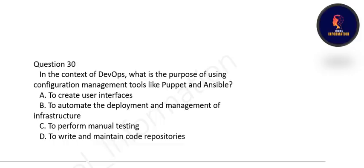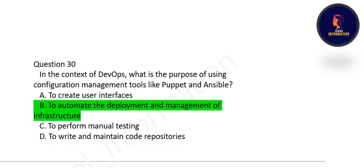Last question: in the context of DevOps, what is the purpose of using configuration management tools like Puppet and Ansible? The correct option is option B — to automate the deployment and management of infrastructure.